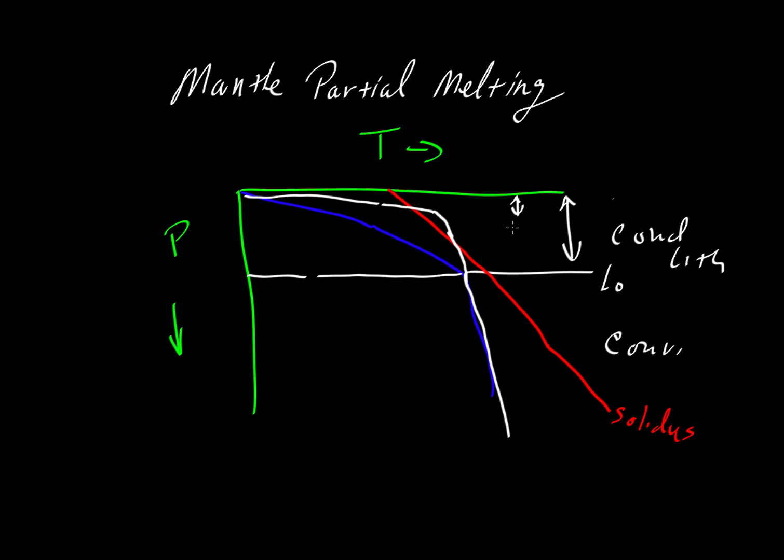So this is our initial lithosphere thickness, we'll call it L0, and then we can have, over here, a lithosphere thickness L1. So L0 is much greater than L1, so we have this thinner lithosphere. And now the geotherm is able to rise to temperatures that are above the solidus.